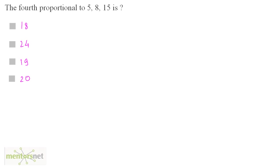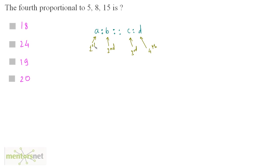The fourth proportional to 5, 8, 15 is? If you have a proportion like A is to B proportionate to C is to D, then A is the first proportional, B is the second, C is the third, and D is the fourth proportional. These numbers A, B, C, and D are in proportion. We have been given three numbers 5, 8, 15. Let the fourth number be x, and these are in proportion.